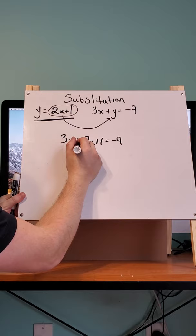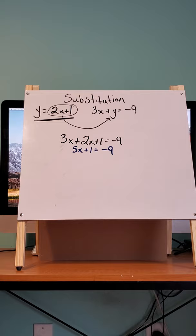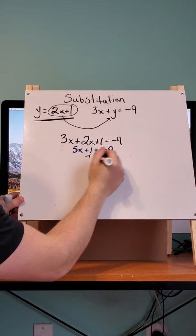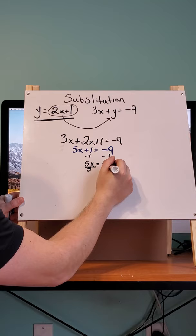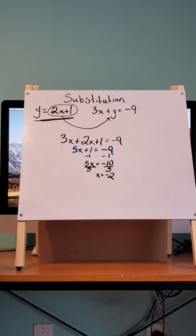And then we're going to combine like terms. So we're going to move the 1 to the other side and get 5x equals negative 10, then divide by 5, and get x equals negative 2.